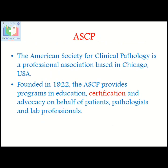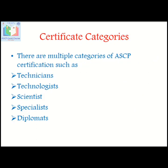ASCP stands for the American Society for Clinical Pathology, a professional association organization based in Chicago, United States of America, founded in 1922. The ASCP provides programs in education, certification, and advocacy on behalf of patients, pathologists, and laboratory professionals. ASCP offers different types of certification which include technicians, technologists, scientists, specialists, diplomats, and many more.